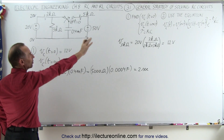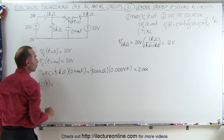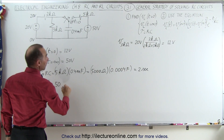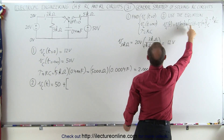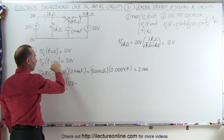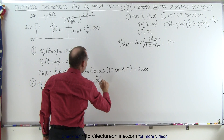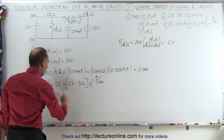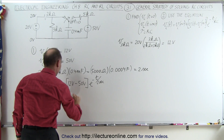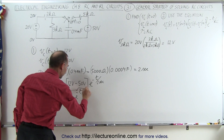Now we can write the equation. The voltage across the capacitor as a function of time equals 50 volts — the voltage at infinity — plus 12 volts (V at t=0) minus 50 volts (V at infinity), times e to the minus t over tau (2 seconds). Simplified, the equation becomes: 50 volts minus 38 volts times e to the minus t over 2 seconds. That is the function for the voltage across the capacitor.